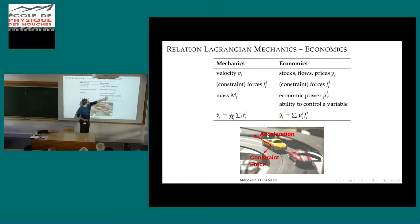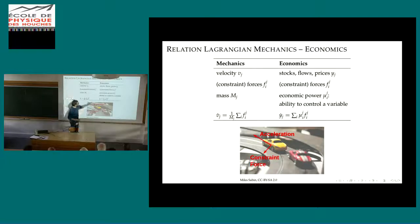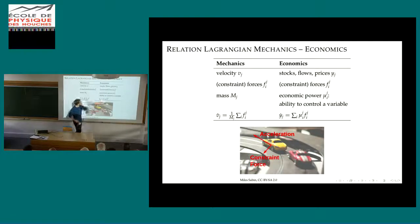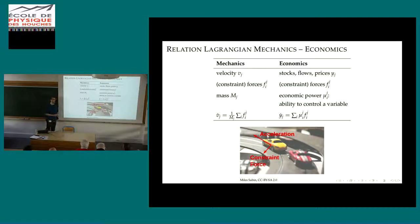We transfer this to economic models. In mechanics, the change of velocity equals one over mass times the forces applied. In economics, we have variables such as stocks, flows, and prices. We introduce a term we call economic power—analogous to 1/mass. If you have a high mass, a force leads only to a small change in velocity; in economics, economic power is the ability to control a variable. If you have a huge desire to become rich but cannot change anything in the economic system, your force will have no impact. This formalizes who is able to control the interest rate—the market or the central bank, for example.